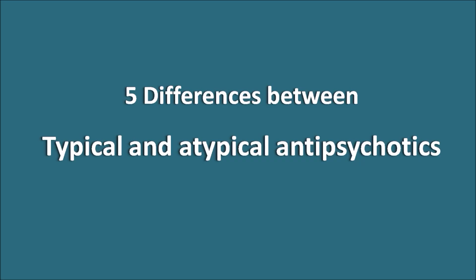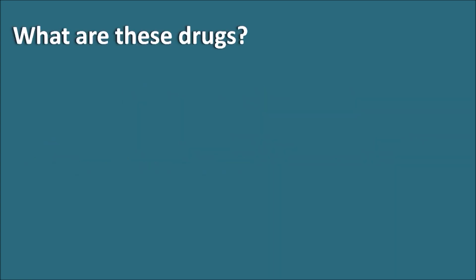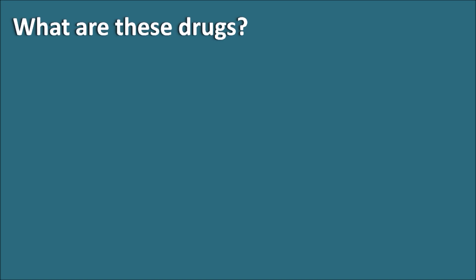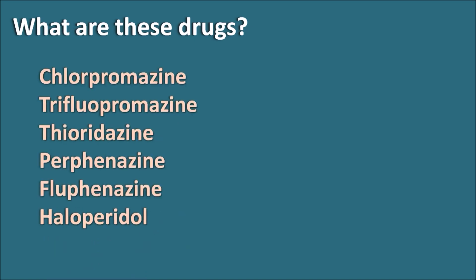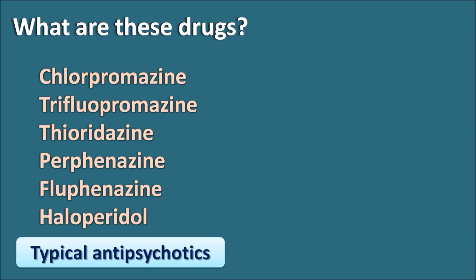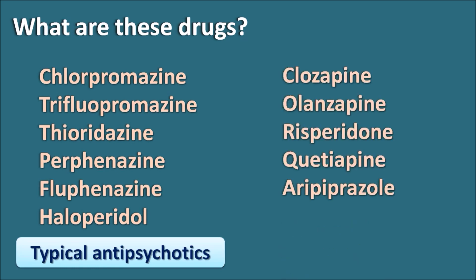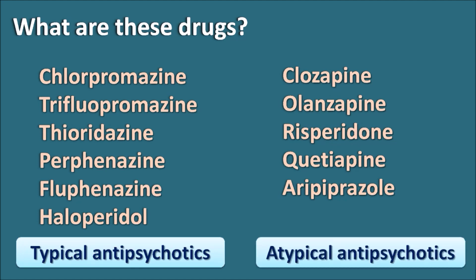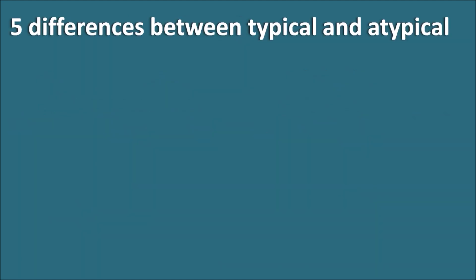Five differences between typical and atypical antipsychotics. First, let us see what these drugs are. Drugs like chlorpromazine, triflupromazine, thioridazine, perphenazine, fluphenazine, and haloperidol are called typical antipsychotics. On the other hand, drugs like clozapine, olanzapine, risperidone, quetiapine, and aripiprazole are called atypical antipsychotics.